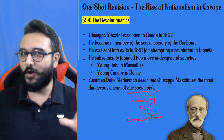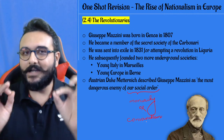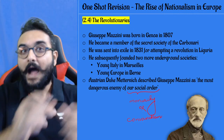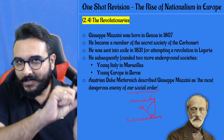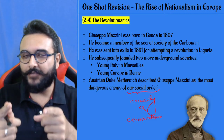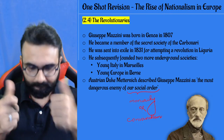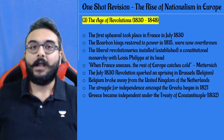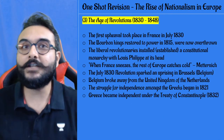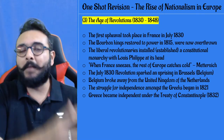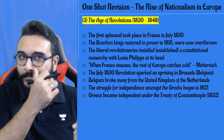Young Italy was established in Marseille, France, and Young Europe was established in Berne, Switzerland. The kings feared Giuseppe Mazzini because the common people would always support the revolutionaries, not the kings. The Duke of Austria, Metternich, once said that Giuseppe Mazzini is the most dangerous enemy of our social order.